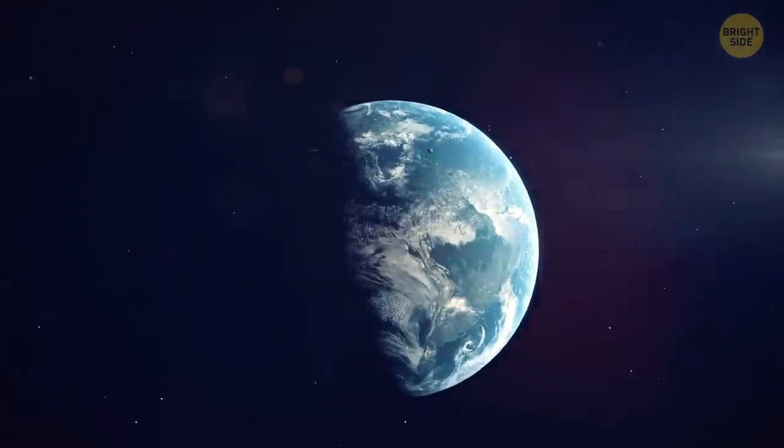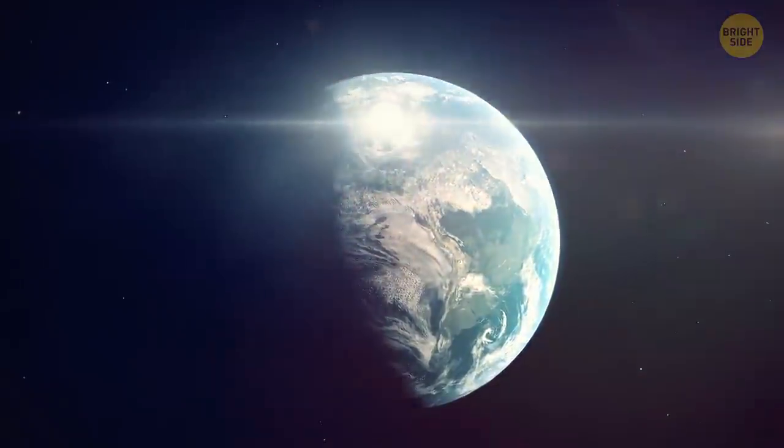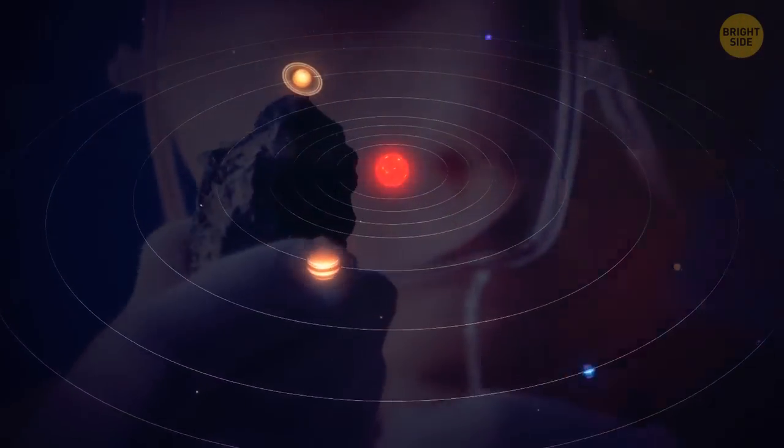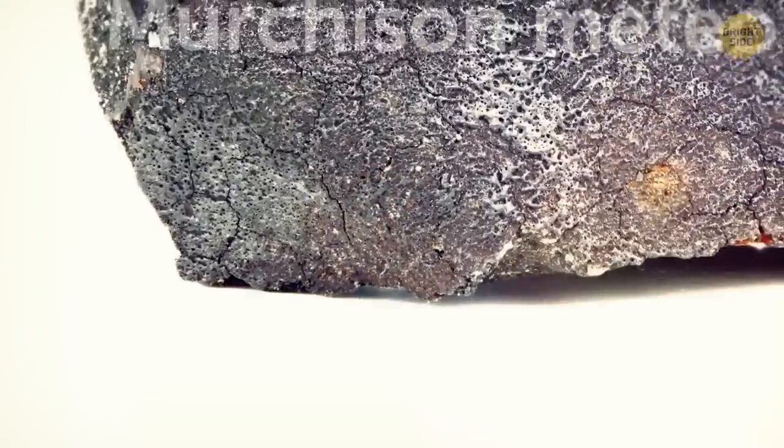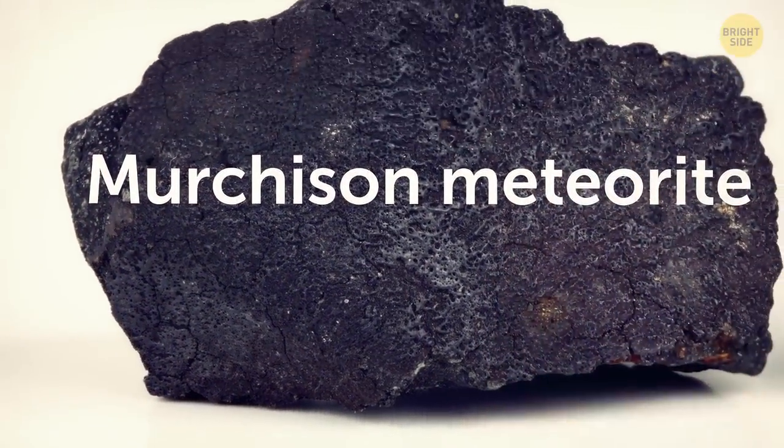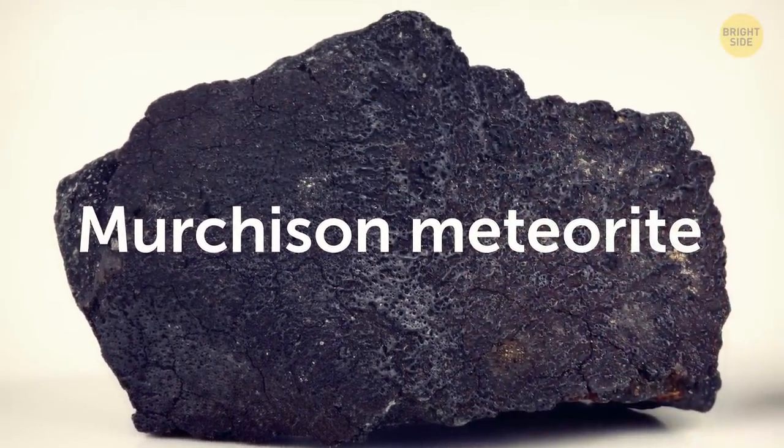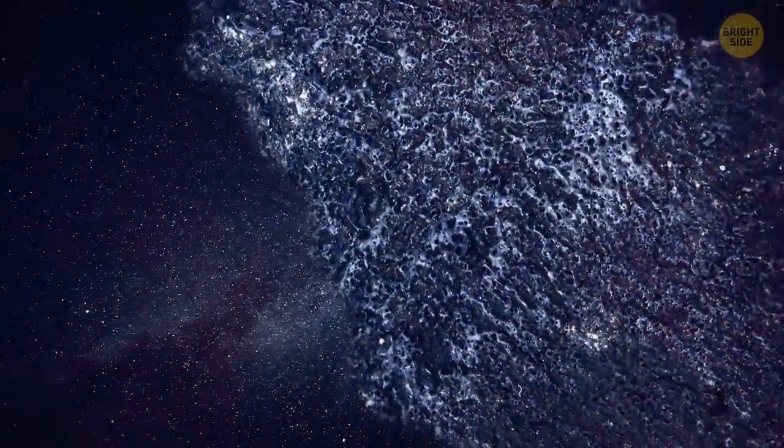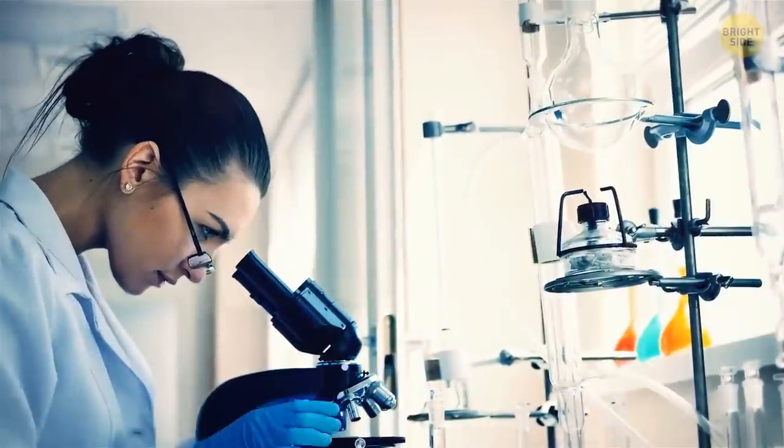The oldest material ever found on our planet turns out to be older than our entire solar system. The Merchinson meteorite plopped into Australia back in September 1969. But we made this staggering discovery after a newer analysis of its debris was done only in 2020.